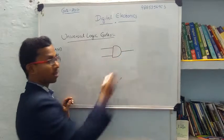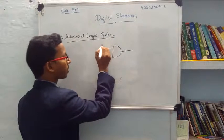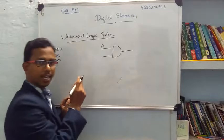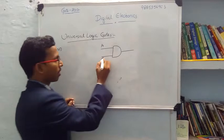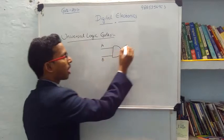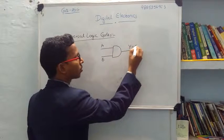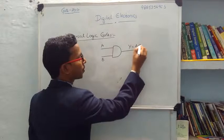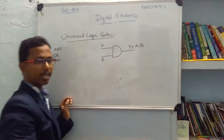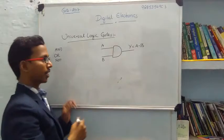There are two inputs and one output. What is the output? Suppose if we take signal A and signal B, the output is Y equals A into B. That is the output of the AND gate.